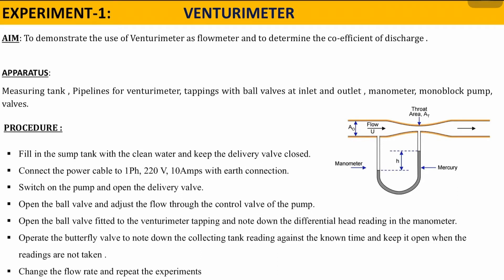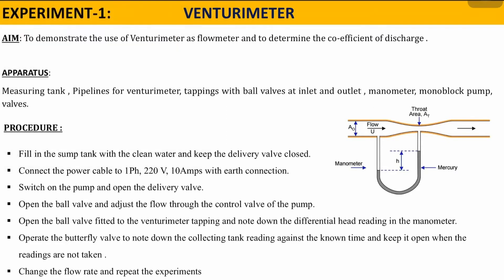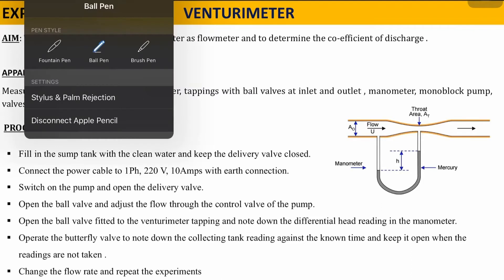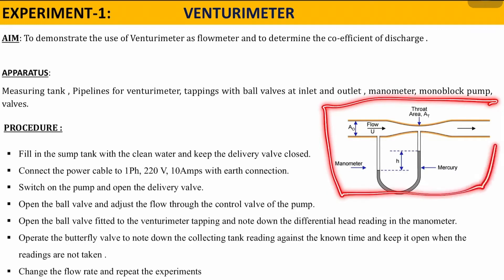The aim of the experiment is to demonstrate the use of a venturi meter as a flow meter and to determine the coefficient of discharge. The apparatus used includes a measuring tank, pipelines for venturi meter tappings, ball valves for inlet and outlet flow, a manometer, a monoblock pump, and valves.